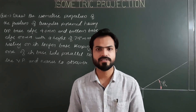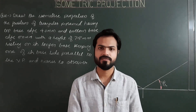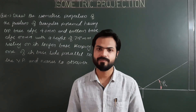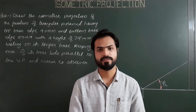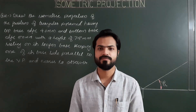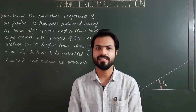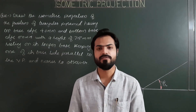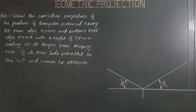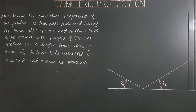In combination of solids we have many options to combine with, but here in single solids frustum takes more time compared to other solids. You also have to draw two helping figures for frustum, and frustum is rarely asked in exams. Today, after hexagonal, square, pentagonal, and frustum of cones, we are going to project the frustum of triangular pyramid. The problem: draw the isometric projection of the frustum of a triangular pyramid having top base edge 40 mm and bottom base edge 50 mm with a height of 75, resting on its longer base, keeping one of its base sides parallel to the VP and nearer to the observer.